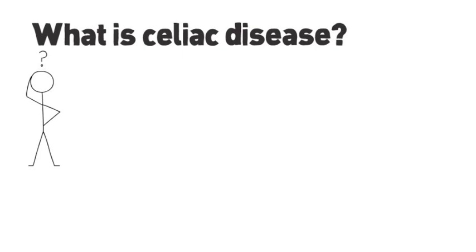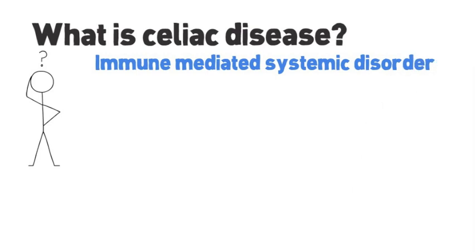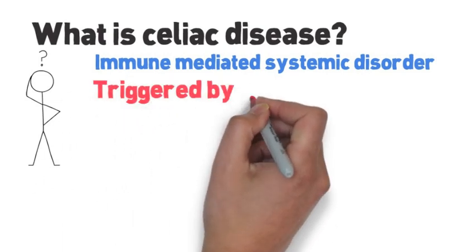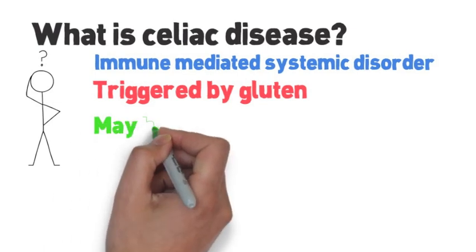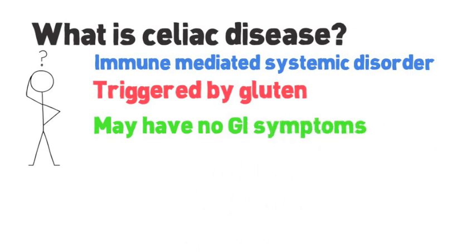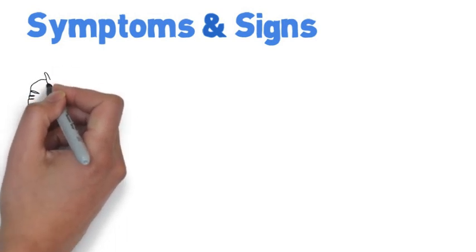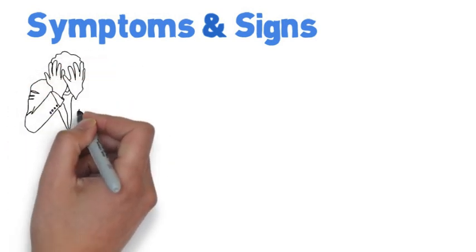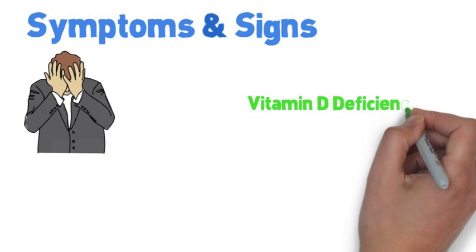Celiac disease is an immune-mediated systemic disorder where your body has a reaction to gluten that causes a lot of different symptoms. A lot of times people have GI symptoms, but some people may not have any GI symptoms like abdominal pain or diarrhea, and just because you don't doesn't mean you don't have celiac disease. Celiac disease can make you feel pretty horrible because it can have multiple effects and cause many deficiencies in the body.